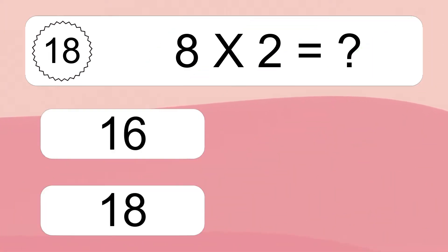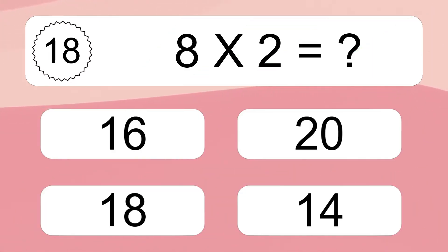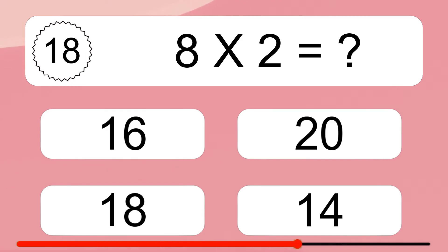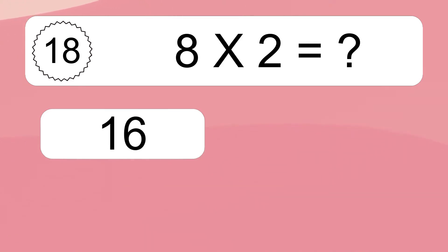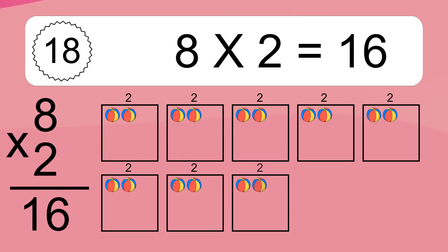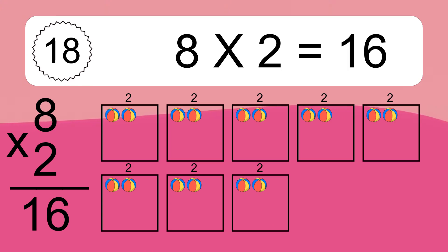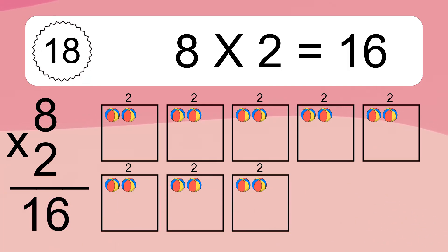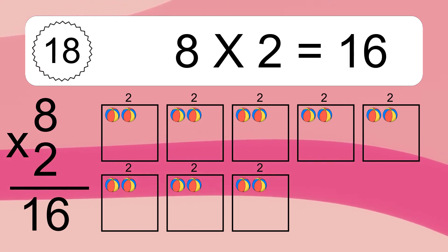Eight times two equals what? Eight times two equals sixteen. We have eight boxes, and each box has two colorful balls inside. If you count all the balls in all the boxes together, you will have eight times two balls. This equals sixteen balls.